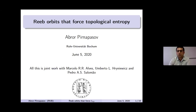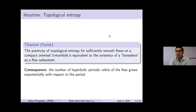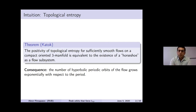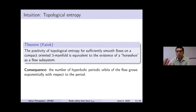I will start by giving intuition for topological entropy. Topological entropy is a topological complexity of a flow, which is always a non-negative number, and we are interested in the positive topological entropy cases. Positive topological entropy for sufficiently smooth flows on compact orientable 3-manifolds is equivalent to the existence of a horseshoe as a flow subsystem, or in other words, existence of a homoclinic periodic orbit. A consequence of this is that the number of periodic orbits grows exponentially with respect to the period.